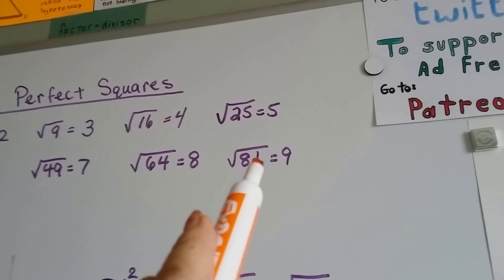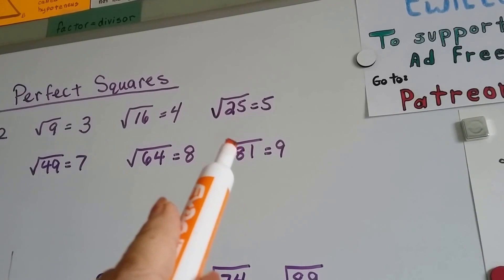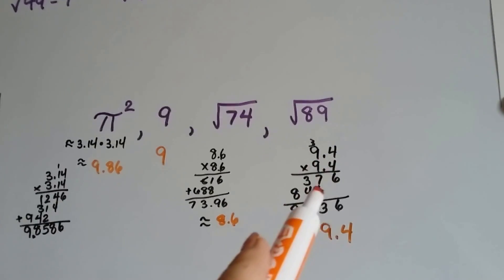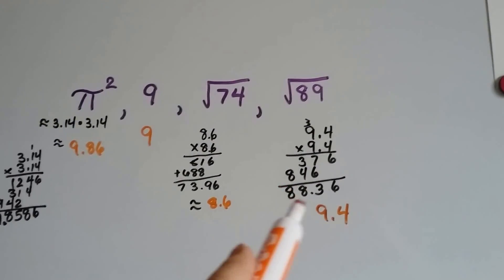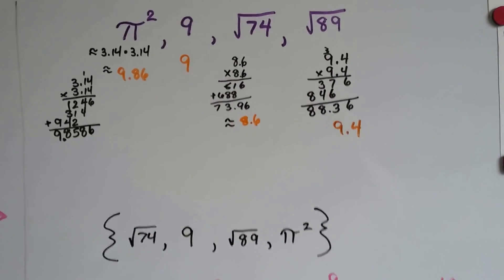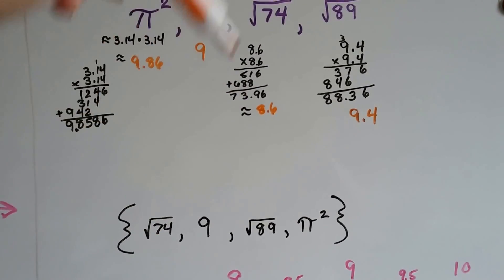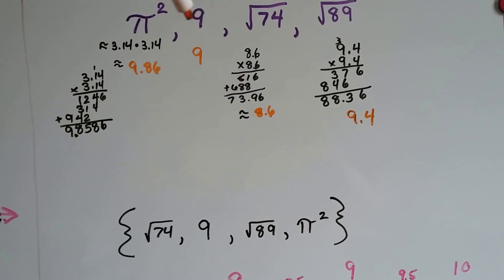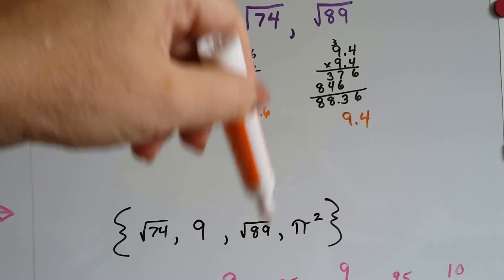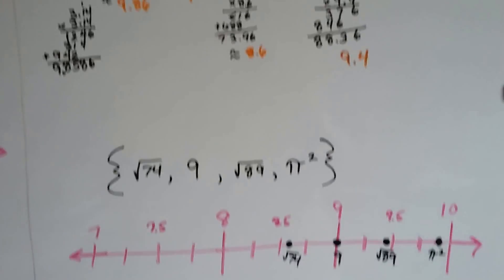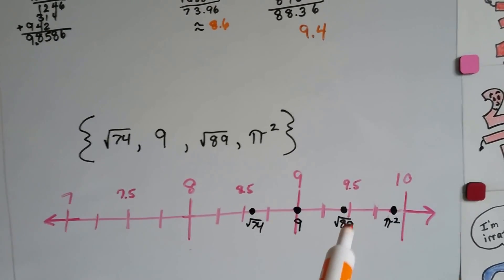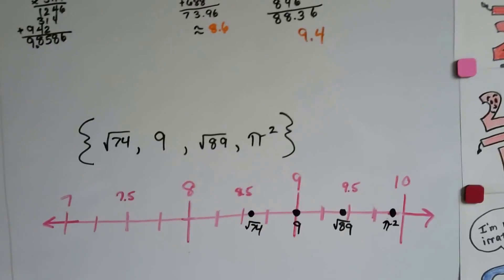The square root of 89 is in between the square root of 81 and 100, so I figured it's somewhere around 9.5. But I tried 9.4 and came up with 88.36 — pretty close to 89, so I'll use that as my approximation. Now we can put them in order: the smallest is the square root of 74 at 8.6, then comes 9, then the square root of 89 at about 9.4, and then pi squared is the largest at 9.86. We can put them on a number line in that same order.